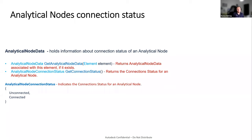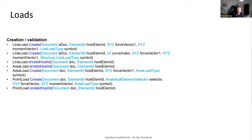To check the connection status for an analytical node, we introduced a new class called AnalyticalNodeData, which holds information about the connection status of an analytical node. You can access it via GetAnalyticalNodeData for a certain element — it returns null if the element has no analytical node data. The connection status can be either connected or unconnected. Applications can use this to verify which elements are connected and which are not.